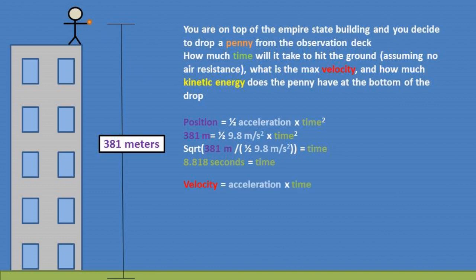Now let's solve for velocity. We can use our velocity equation of acceleration times time equals velocity. We will plug our total time of free fall of 8.818 seconds, and we get a velocity of 86.416 meters per second.